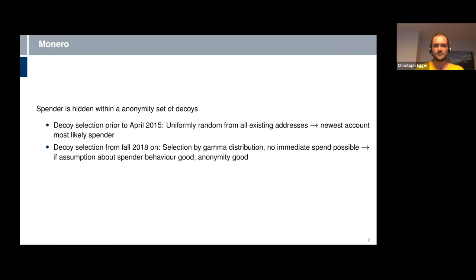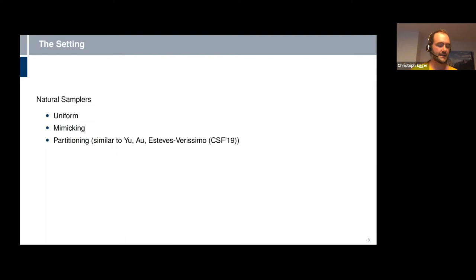The anonymity of your system is considerably worse than what you had in mind. The solution that was proposed and implemented is to select according to some distribution that is likely or assumed to be the actual spender distribution. You sample decoys with the same probability that they actually have to sign themselves. This is assumed to be good, and we will figure out that this actually is a good approach.